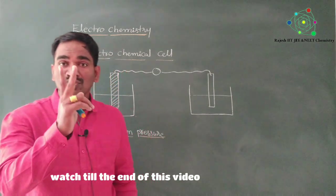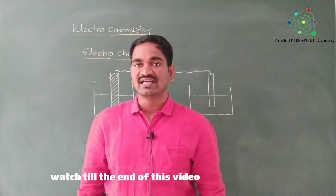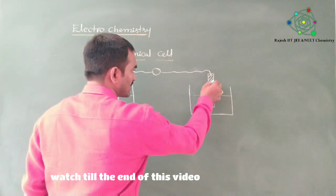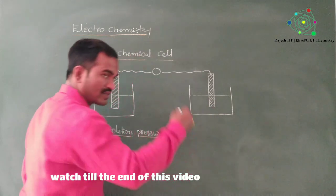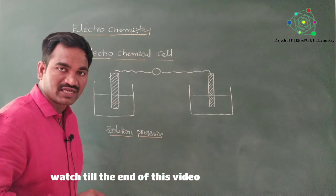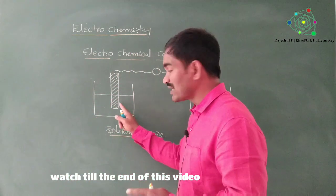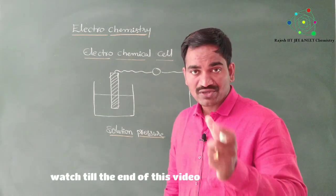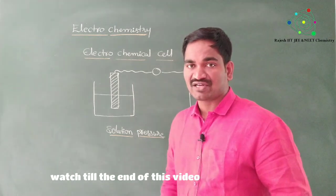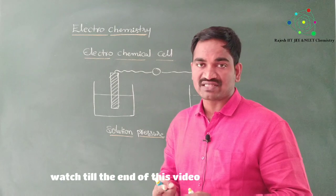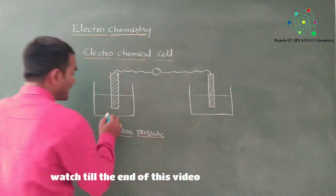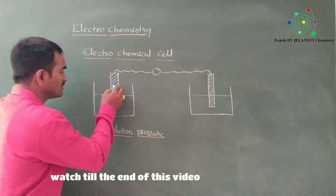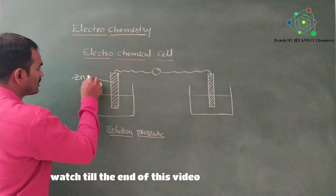Whenever you suspend any metal rod into its ionic solution, some pressure develops. That pressure is of two types: one is solution pressure and another one is osmotic pressure. I want to focus first on solution pressure. For a familiar example, you take a zinc rod — you know very well about that — and it is dipped in zinc sulfate solution.